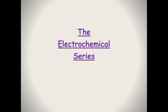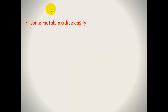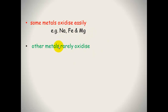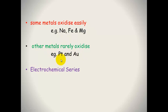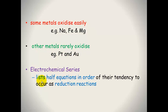The electrochemical series is found on the back of the laminated periodic tables and is always given to you. Some metals oxidize easily — for example, sodium, iron, and magnesium. Other metals rarely oxidize — for example, platinum and gold. This is where the electrochemical series comes into play. It lists half equations in order of their tendency to occur as reduction reactions.